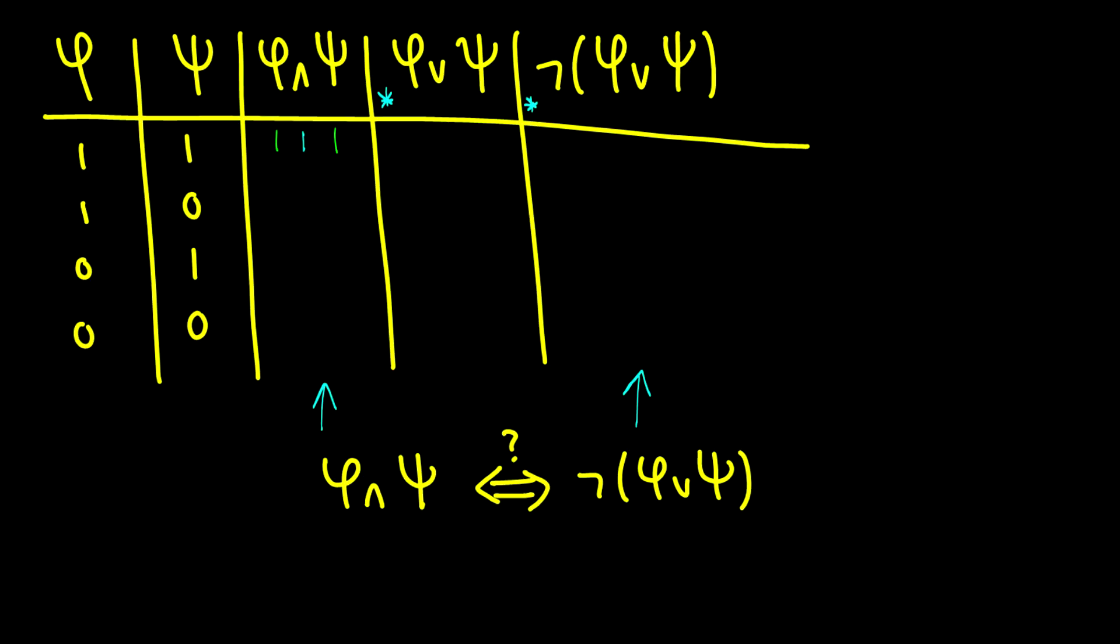So φ∨ψ requires that at least one of them is true, which we know is going to be true. And the negation of it just says that whatever the value is in this column, we just subtract one from it. So this becomes zero. So we can see right away that we have a one in our first line for φ∧ψ, but we have a zero in our first line for ¬(φ∨ψ), which means that these two formulas here are not equivalent.